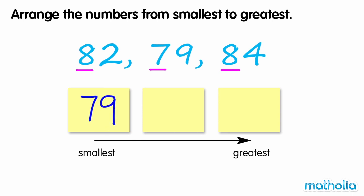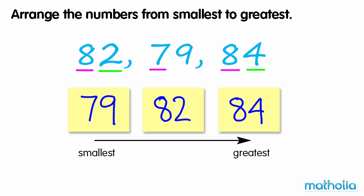Now let's compare the digits in the ones place of the remaining numbers. Four ones is greater than two ones. So eighty-four is the greatest number. From smallest to greatest, the numbers are seventy-nine, eighty-two, eighty-four.